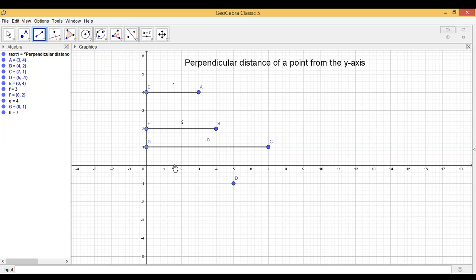We observe that perpendicular distance of a point from the y-axis is the x-coordinate, that is the abscissa of the point. So now you tell me,